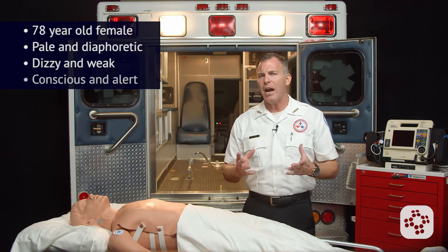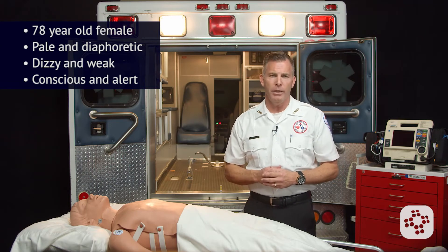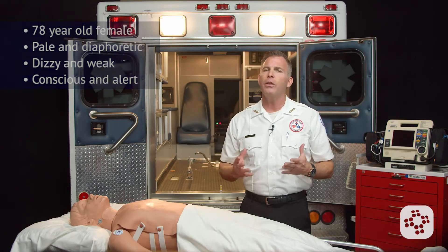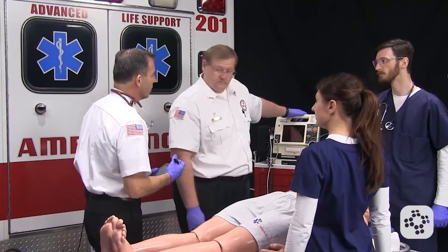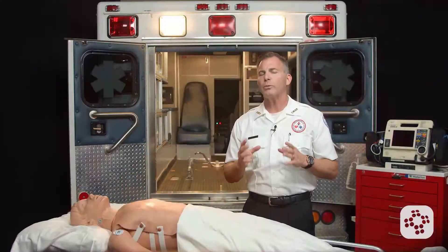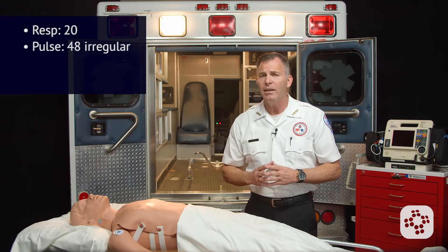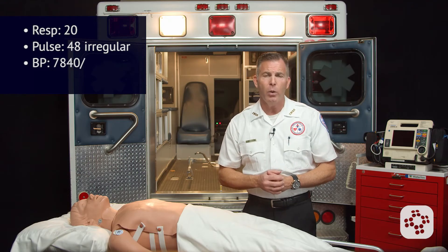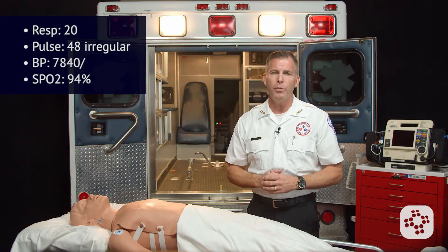Because the patient is conscious and alert, we can say that she's stable at the moment. But since we do not have any immediate life-threatening conditions, the first step is getting a set of vitals. You direct your assistant to check the vitals, and they tell you the patient has respirations around 20, heart rate of 48 and irregular, blood pressure at 78 over 40, with an SpO2 of 94% on room air.